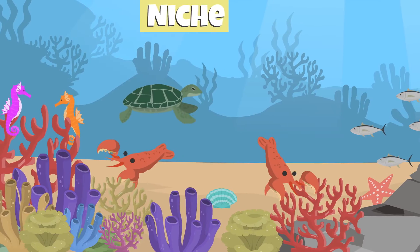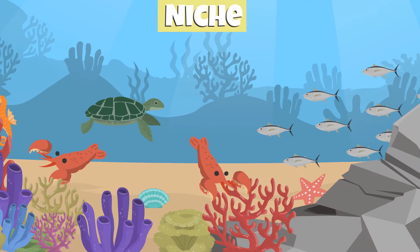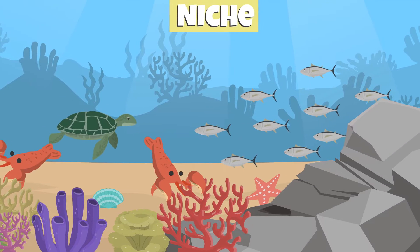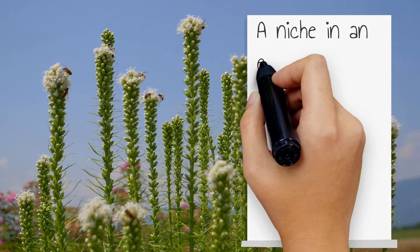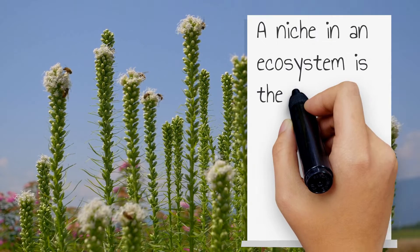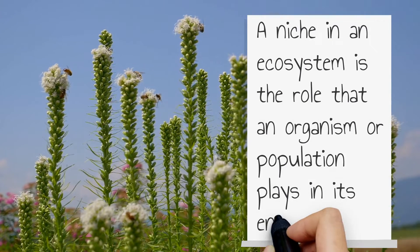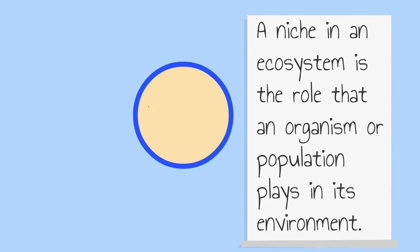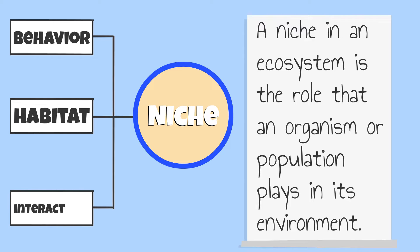This is especially true when the niche of different organisms overlap and the population density is high. A niche in an ecosystem is a role that an organism or population plays in its environment. This can include the organism's behavior, habitat, and interactions with other living and non-living things in an ecosystem.